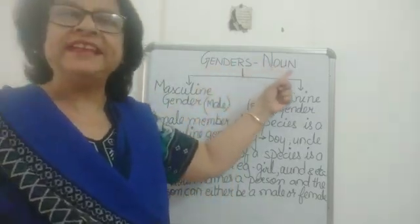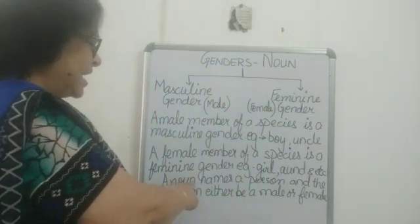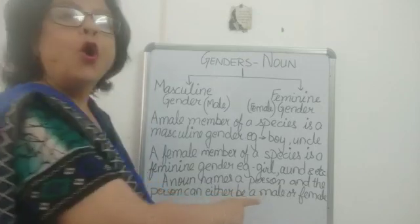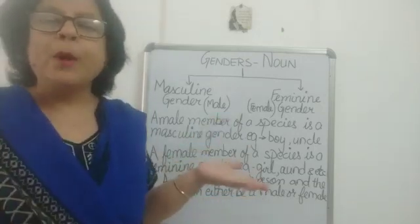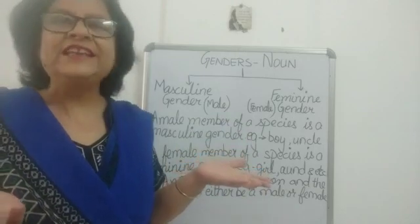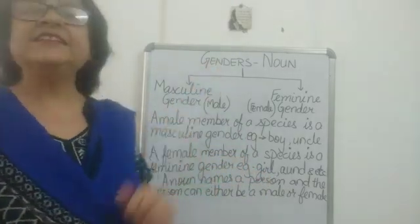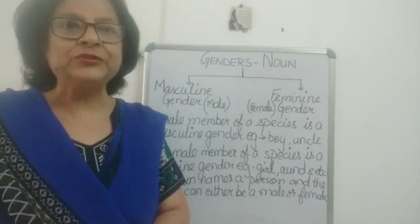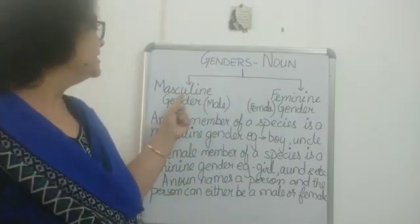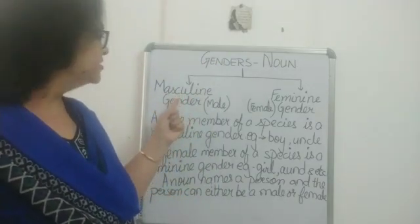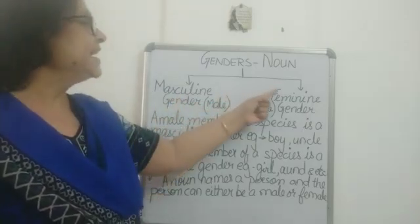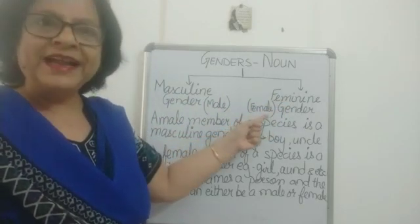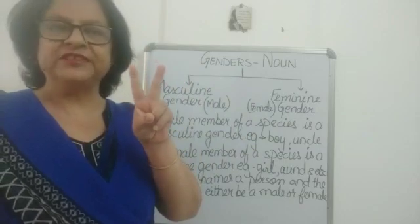Genders are basically nouns. A noun names a person, and a person can either be a male or a female. So males and females are genders. The genders, according to Class 2, can be divided into two categories: masculine gender, meaning males, and feminine gender, meaning females.